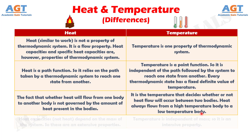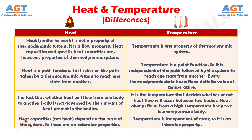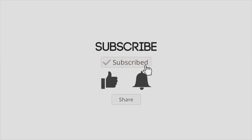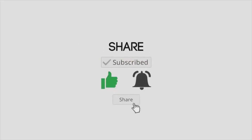Difference No. 13: Heat capacities depend on the mass of the system, so these are extensive properties. However, specific heat capacities are intensive properties, whereas temperature is independent of mass, so it is an intensive property.